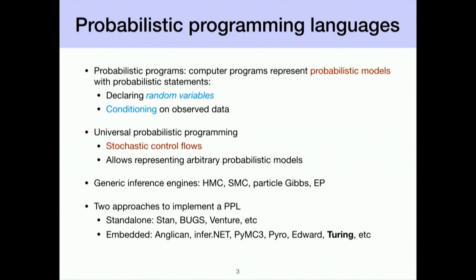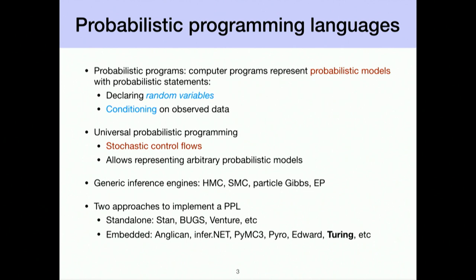Given that we allow users to represent arbitrary probabilistic models, we also want users to do inference easily, using generic inference algorithms such as HMC, SMC, Particle Gibbs, or EP. There are two approaches to implementing a probabilistic programming language: standalone languages with their own compiler, and embedded probabilistic programming languages that live inside a master language and support probabilistic statements. Turing takes the embedded approach.